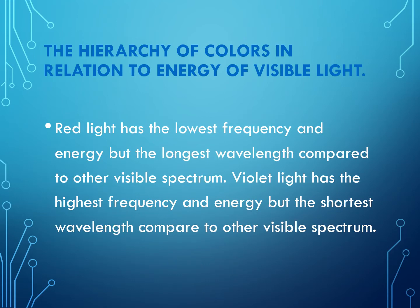Red light has the lowest frequency and energy but the longest wavelength compared to other visible spectrums. If you compare red light and violet light, they are opposite. Red is lowest in frequency, while violet's frequency is highest. In terms of wavelength, red light is the longest, while violet is actually the shortest.